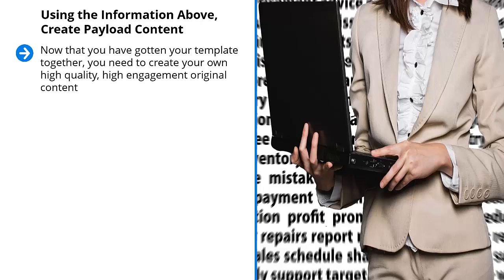Using the information above, create your payload content. Now that you have your template together, you need to create your own high-quality, high-engagement original content. This content is going to be used to sell people on your mailing list — when they read it, they're supposed to get excited about joining. This is content that is most likely to be credible and most likely to be shared.